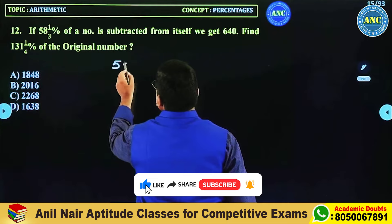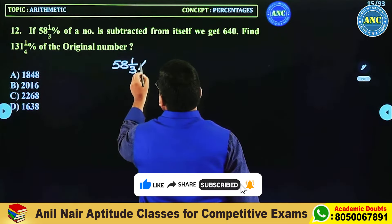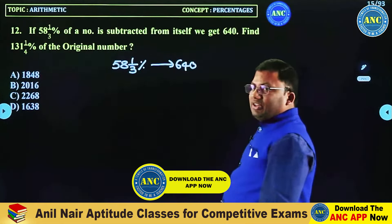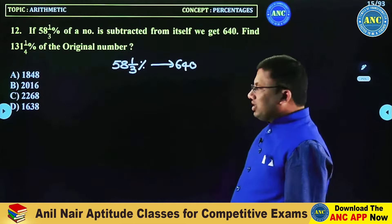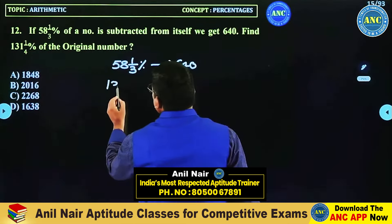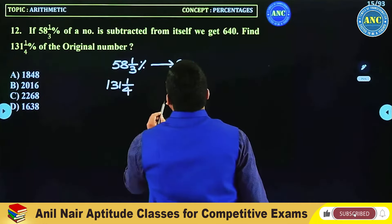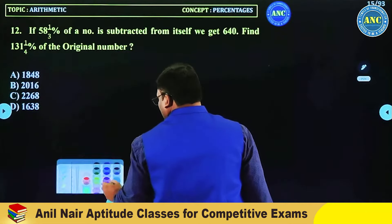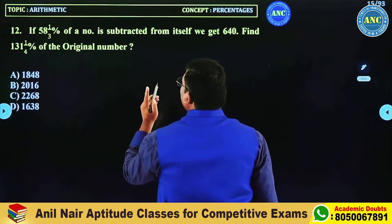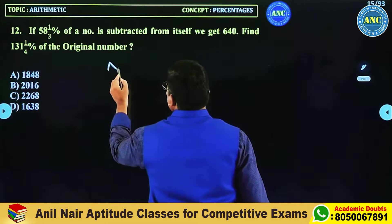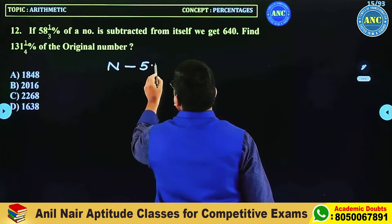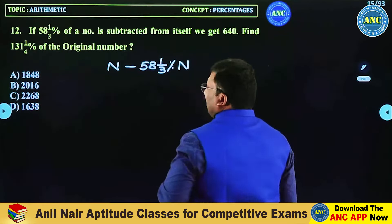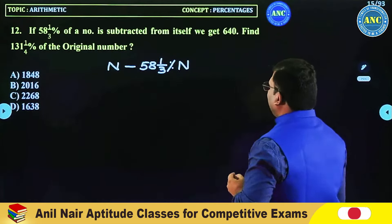58 and 1/3 percentage is subtracted from a number. Here we did not read the question properly — let us re-read it. 58 and 1/3 percentage is subtracted from a number which is 50n. We are subtracting 58 and 1/3 percentage from a number.